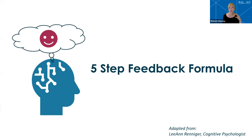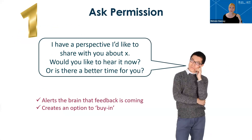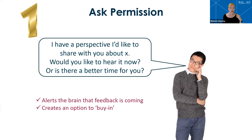Step one is to let the person know that you have some feedback to share and ask their permission to share it. This way the person isn't blindsided and can mentally prepare to receive that feedback. Giving them the option of when they hear the feedback gives them a sense of control — and remember that primordial fear related to loss of autonomy. So we're making sure they still feel that sense of control. Our feedback giver says: "I have a perspective I'd like to share with you about X. Would you like to hear it now, or is there a better time for you?"